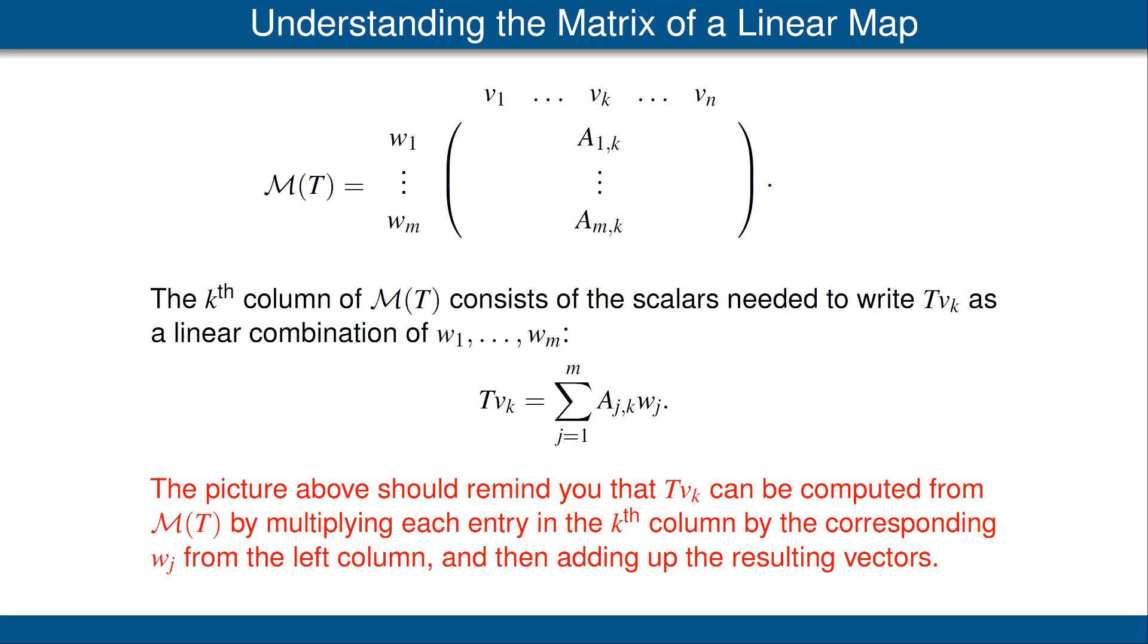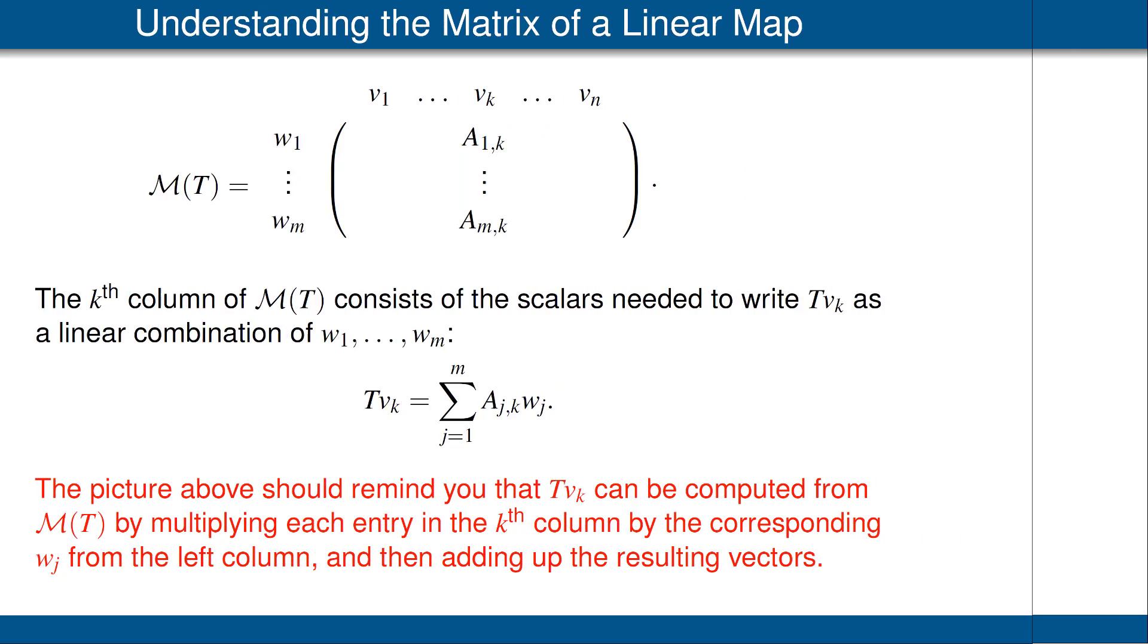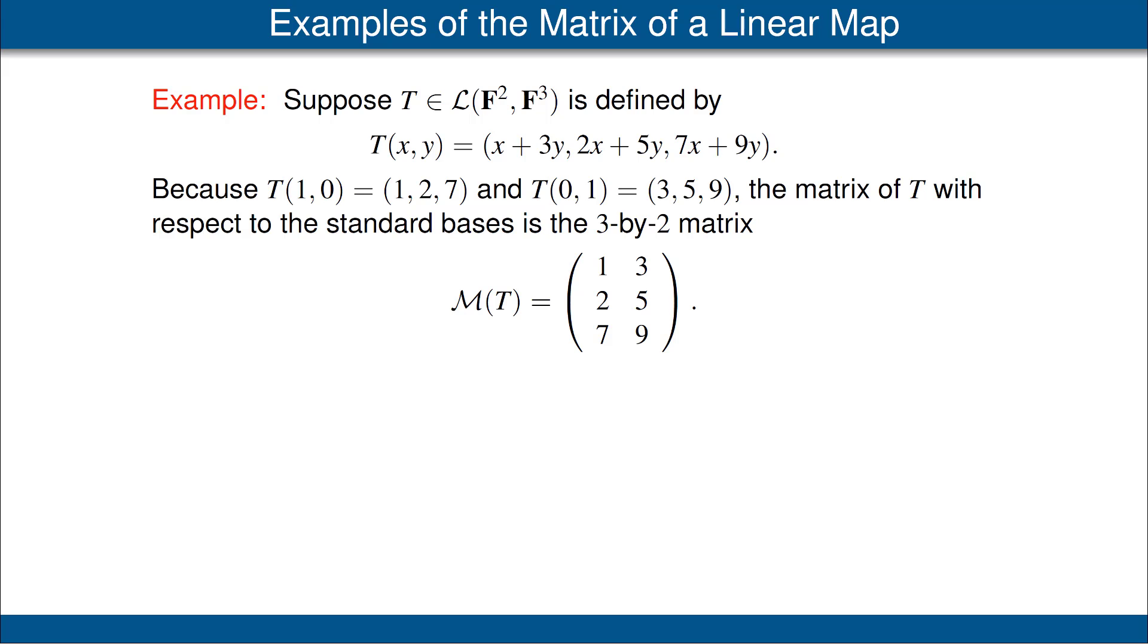Thus, the picture above should remind you that T of vₖ can be computed from the matrix by multiplying each entry in the kth column by the corresponding wⱼ from the left and then adding up the resulting vectors. Remember that this matrix depends upon the linear map T and the bases v₁ up to vₙ for V and w₁ up to wₘ of W that are chosen. Often we'll leave the bases out of the notation because they should be clear from the context. So often we write just M of T, but that matrix depends very much on the basis chosen for V and the basis chosen for W.